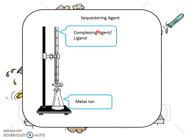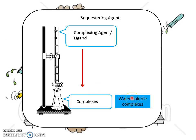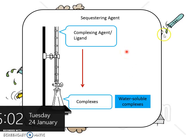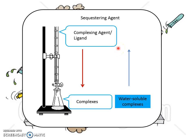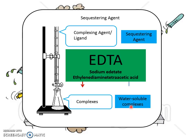Complexing agents or ligands react with the metal ion and produce complexes that are water-soluble. This ligand is in turn called a sequestering agent. We want most of our complexes to be water-soluble for easy disposal. The most common sequestering agent is EDTA — sodium edetate, ethylene diamine tetraacetic acid.